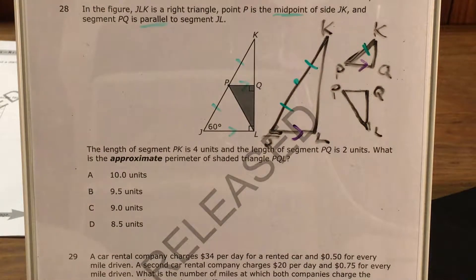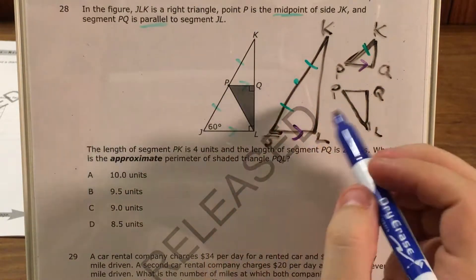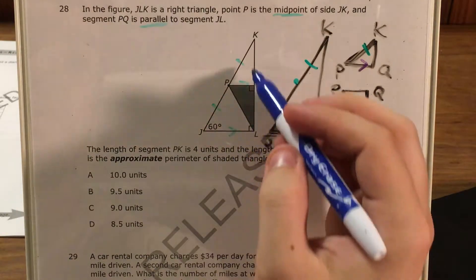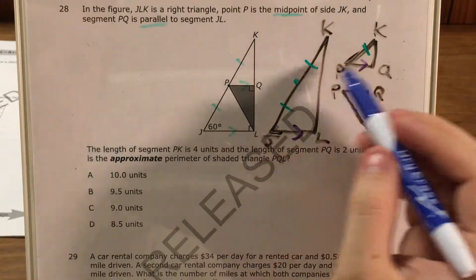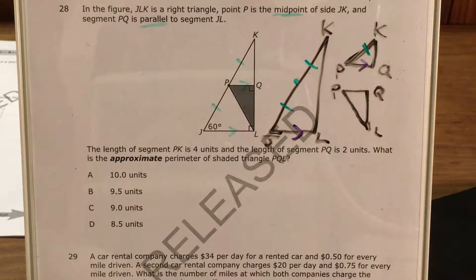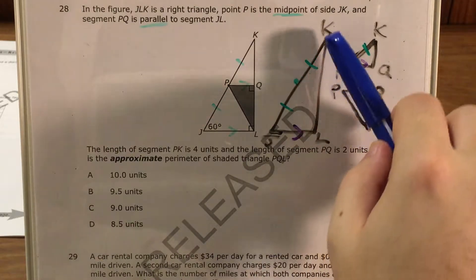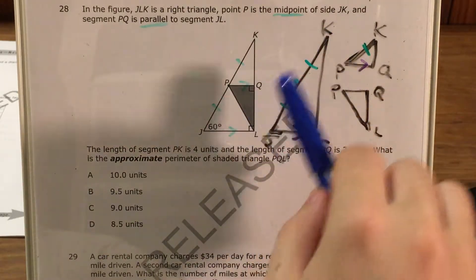Now at this point I'm gonna remember my similar triangles, and I'm gonna remember that the idea of similar triangles says that if these two lines are parallel, I actually have this small triangle and this big triangle as similar triangles, and any side on this small one is gonna be half the length of the corresponding side on this big one.